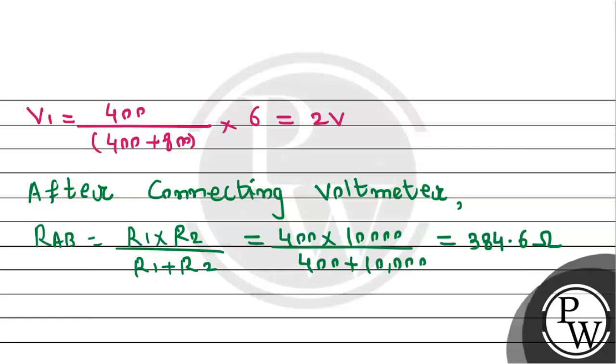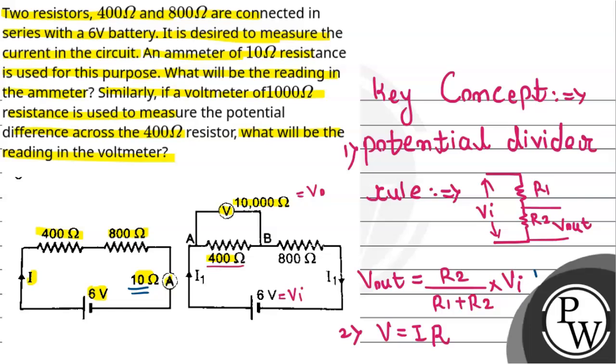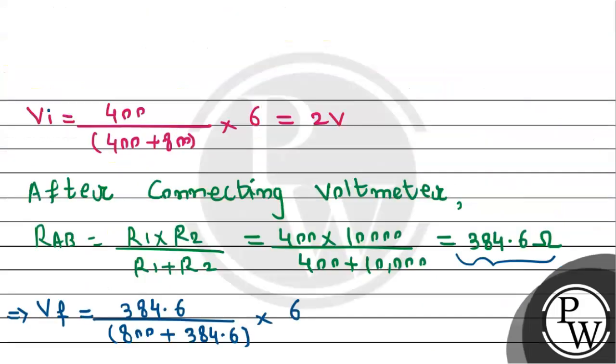Now in this case, the potential difference measured by the voltmeter - initially it was 2V, and now after connecting the voltmeter, the final reading will be: By using the same potential divider rule, we're measuring potential across this equivalent resistance. R2 becomes 384.6 divided by (R1, which remains 800, plus R2 which is 384.6) multiplied by the input voltage. Now the reading comes to 1.95V.